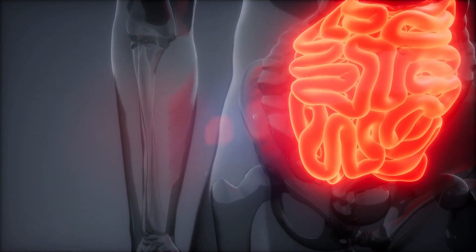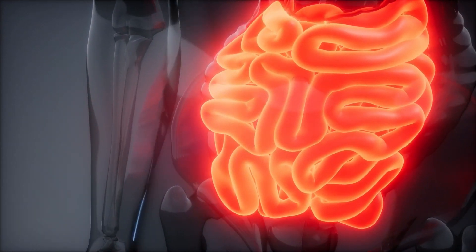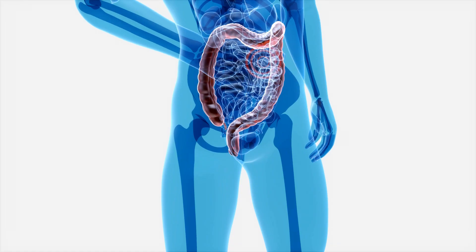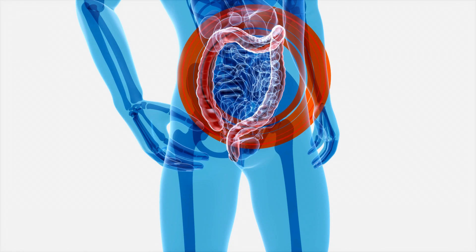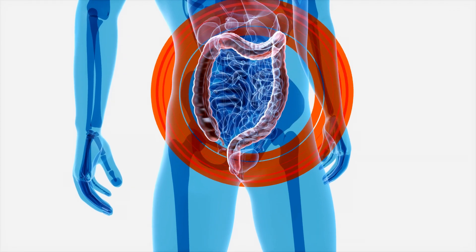Your gut is comprised of the small intestine and the large intestine, and it is in the large intestine that the vast majority of your gut bacteria should live. However, the system can sometimes fail and the bacteria can find their way into the small intestine where it doesn't belong.